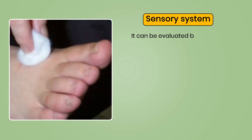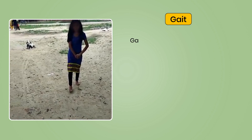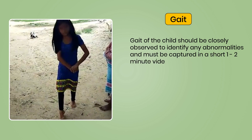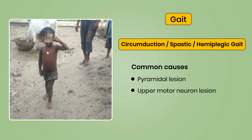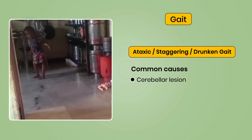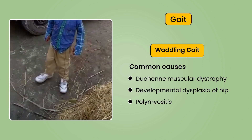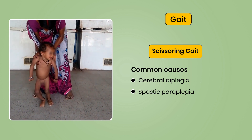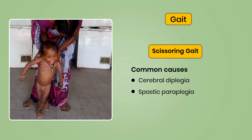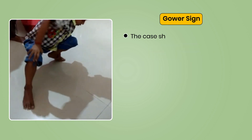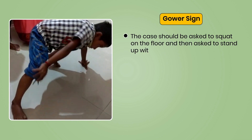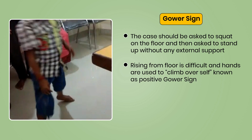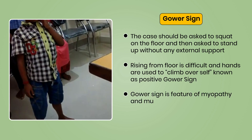The sensory system can be evaluated by looking for sensation for touch and pain. Gait of the child should be closely observed to identify any abnormalities and captured in a short 1–2 minute video. Gait types include circumduction, spastic or hemiplegic gait, high-stepping gait, ataxic or staggering gait, waddling gait, limping gait, and scissoring gait. Gowers' sign: ask the child to squat on the floor and stand up without external support; using hands to climb over oneself is a positive Gowers' sign, a feature of myopathy and muscular dystrophy.